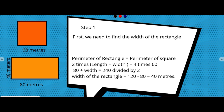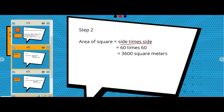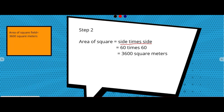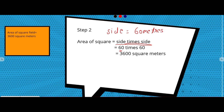In the next step, we find the area of the square. Area of square is side times side. The side of the square is 60 meters, so area = 60 × 60 = 3600. Area of the square field is 3600 square meters.